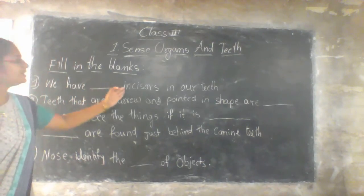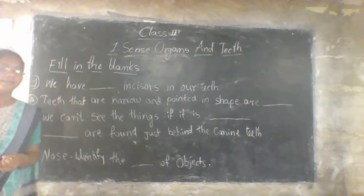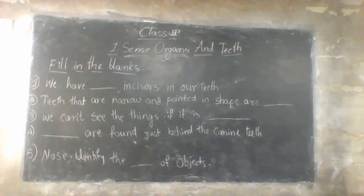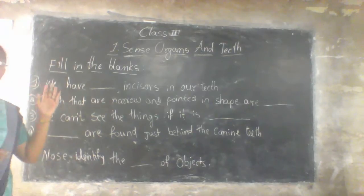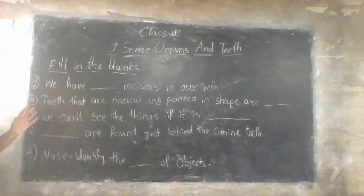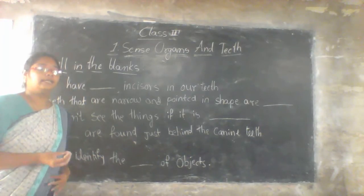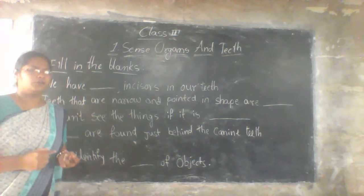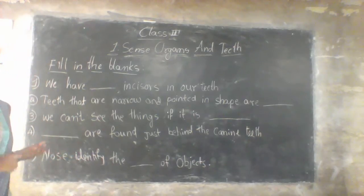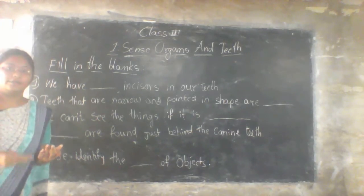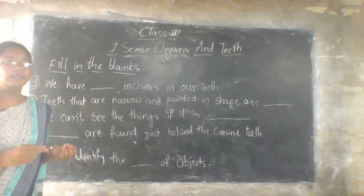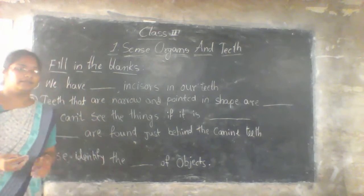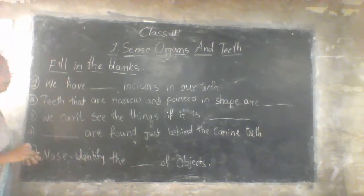Here we have blank incisors in our teeth. Do you remember? I will give you one chart — I am discussing this topic, and the third time I will do one chart: how many teeth in your mouth, how many incisors, how many canines, how many premolars, how many molars. Here we have blank incisors in our teeth — in all your teeth, how many incisors are there?